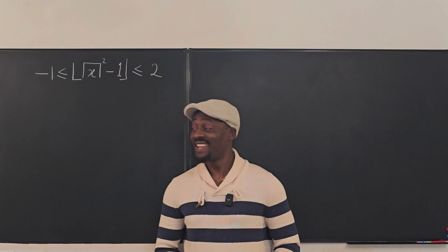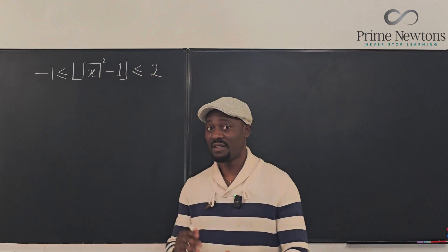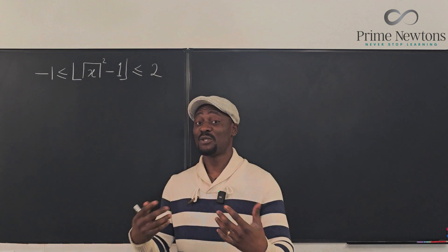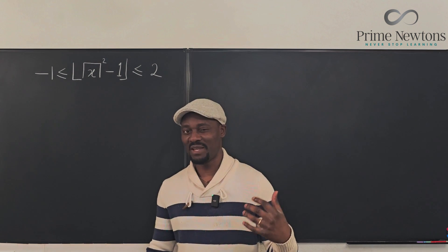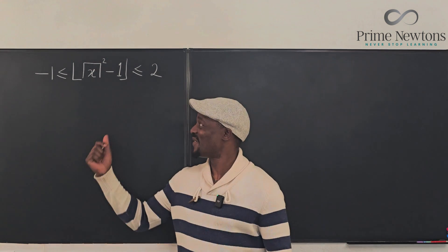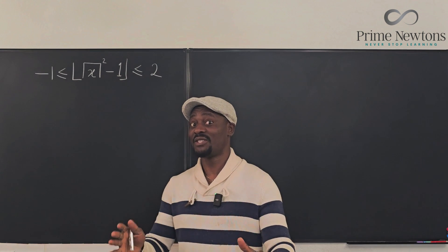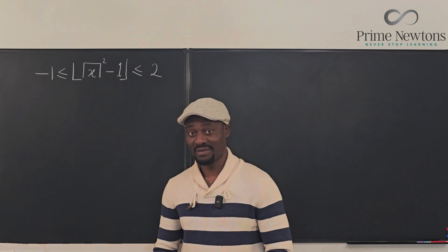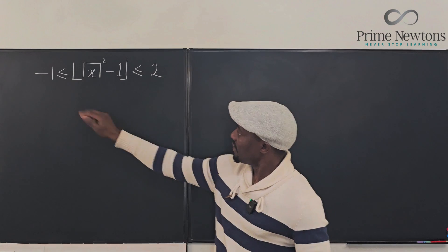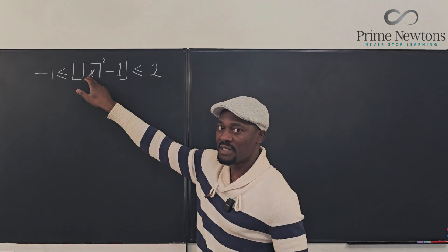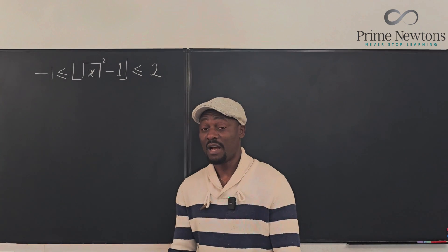Welcome to another video. Let's do another floor and ceiling function problem. This one was sent in a while ago. There were two questions on it — I thought there was just one, so I did the first one in a previous video. I just looked at it again and noticed there was a second question, so apologies if this is coming too late. What we have here is the floor of the square of a ceiling minus one — it's more like a quadratic inequality.